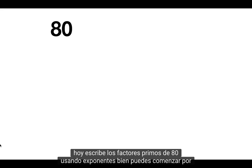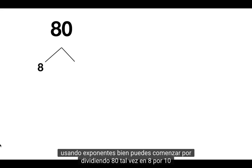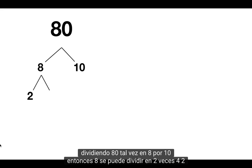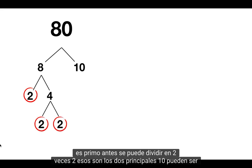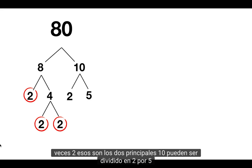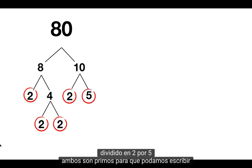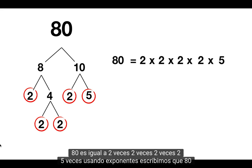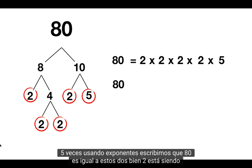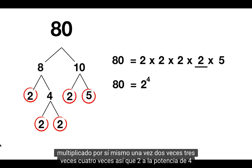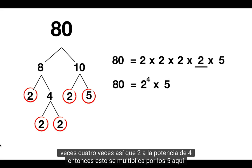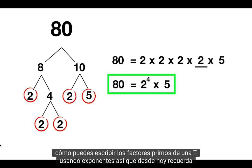Here's your last one for today. Write the prime factors of 80 using exponents. You can start by splitting 80 up, maybe into 8 times 10. Then 8 can be split up into 2 times 4. 2 is prime, but 4 can be split up into 2 times 2 — those are both prime. 10 can be split up into 2 times 5 — both of those are prime. So we can write 80 is equal to 2 times 2 times 2 times 2 times 5. Using exponents, we write that 80 is equal to 2 to the power of 4, then multiplied by 5. Here's how you can write 80's prime factors using exponents.